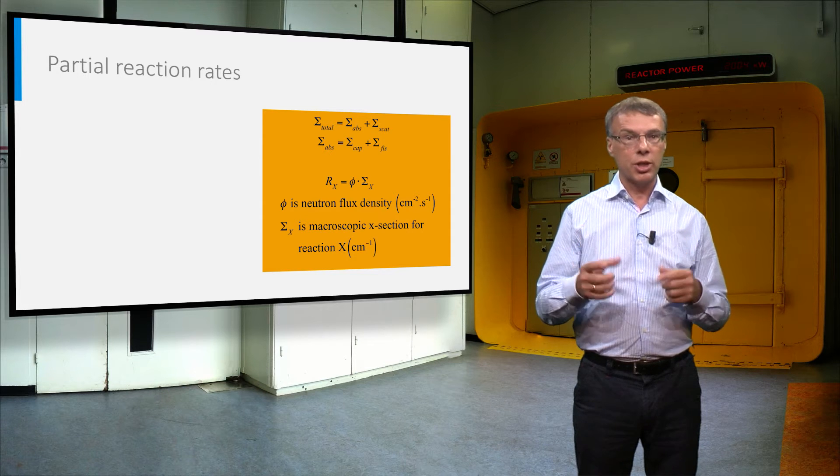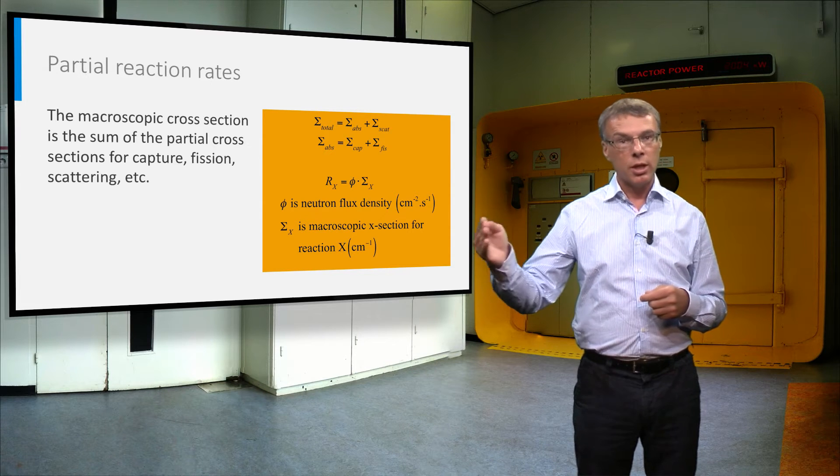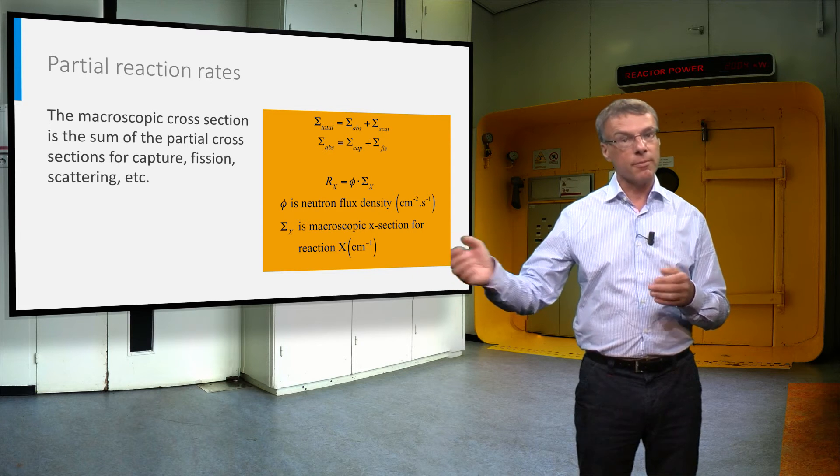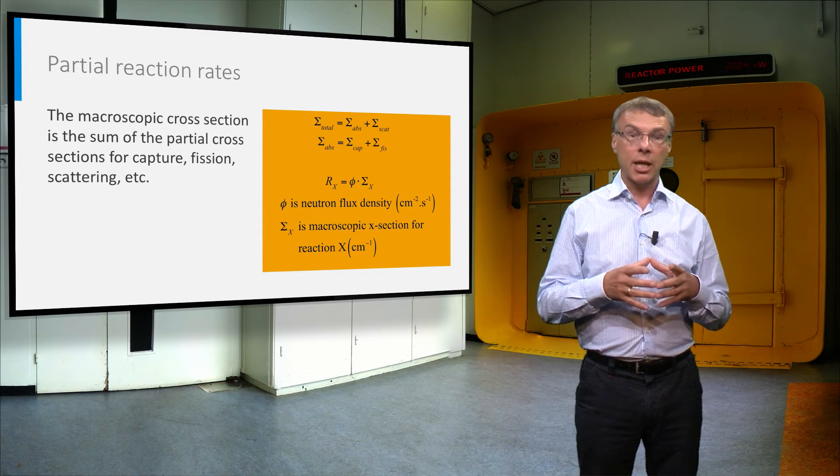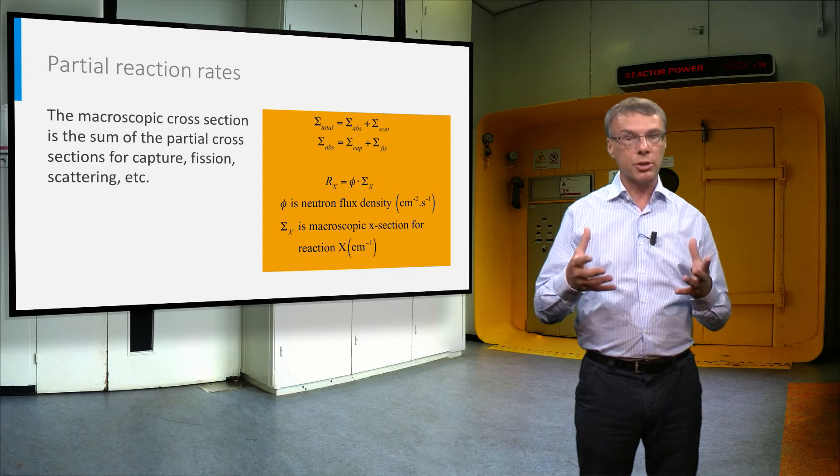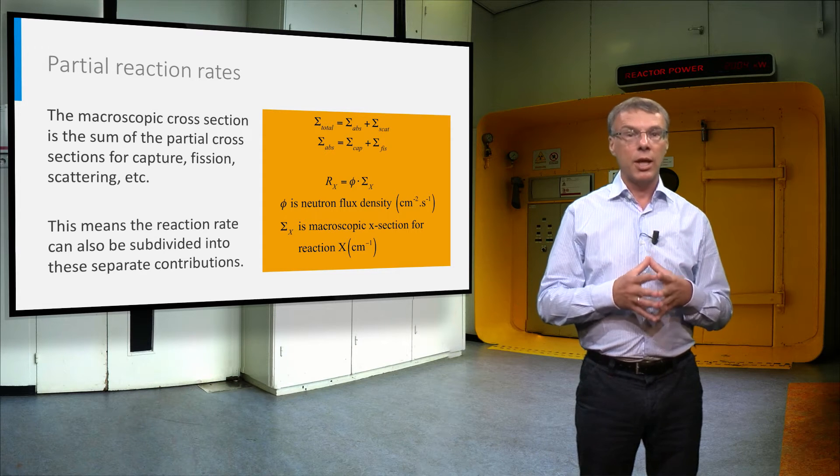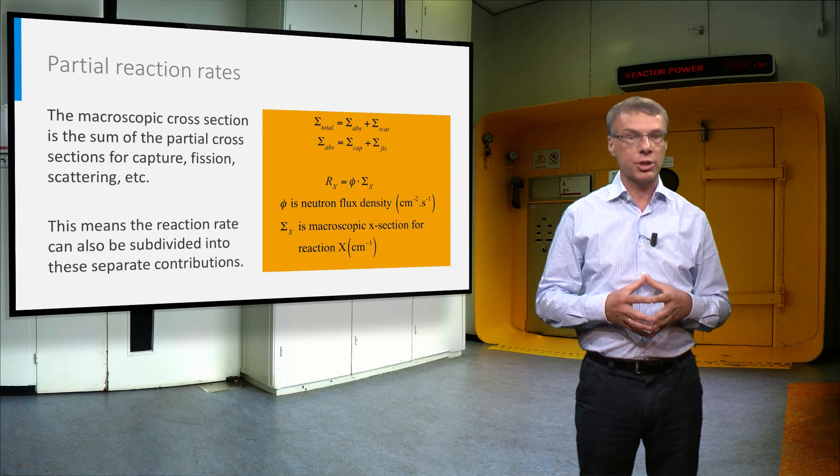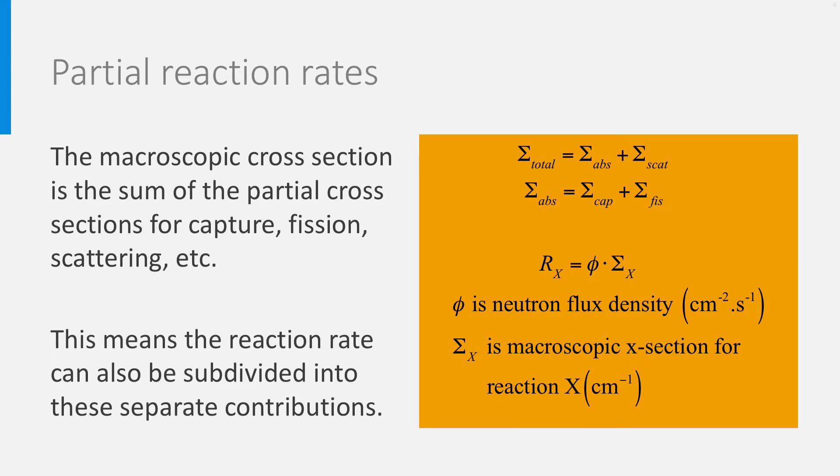Because the macroscopic cross section can be split into the individual contributions due to neutron capture, fission and scattering, the reaction rate can also be subdivided into these separate contributions. And the units of these partial contributions are the same as for the total reaction rate, and the sum of all partial reaction rates is equal to the total reaction rate.